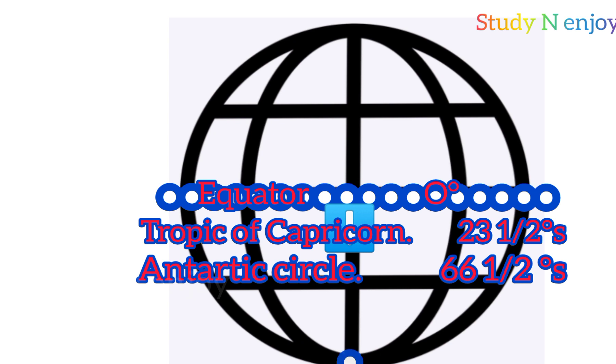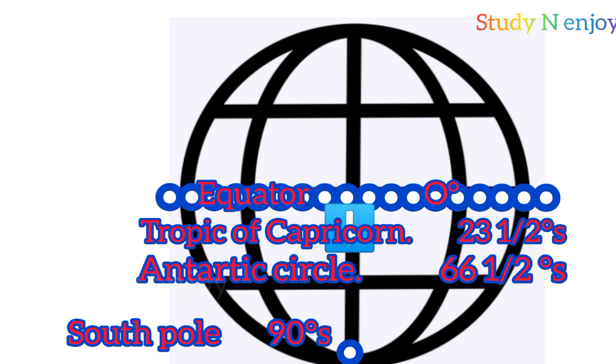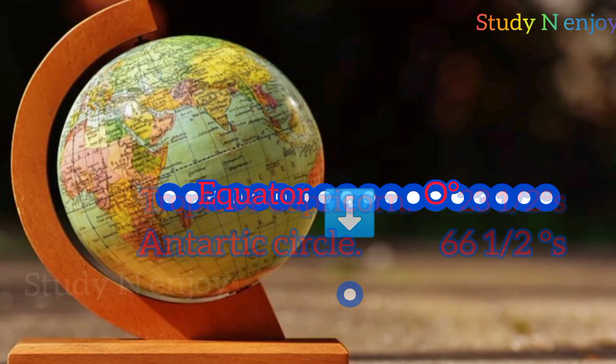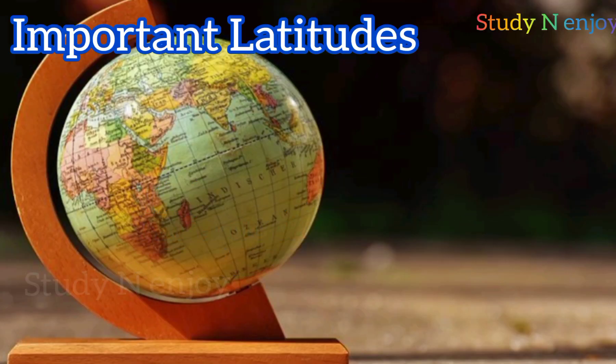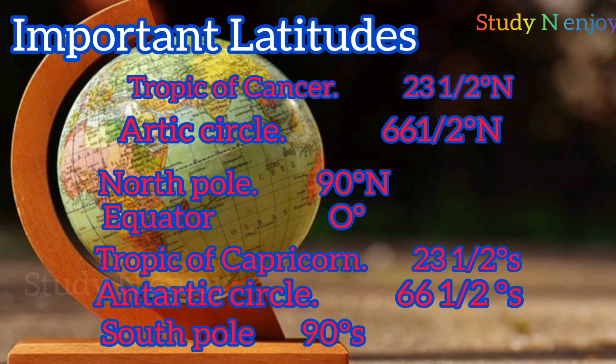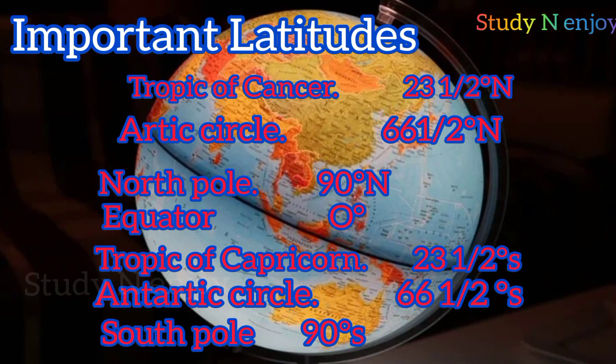The last point southward is the South Pole at 90 degrees South. So, the important latitudes are: Tropic of Cancer at 23.5 degrees North, Tropic of Capricorn at 23.5 degrees South, Arctic Circle at 66.5 degrees North, Antarctic Circle at 66.5 degrees South, North Pole at 90 degrees North, and South Pole at 90 degrees South.